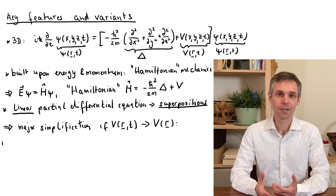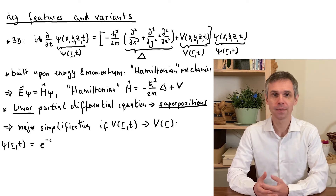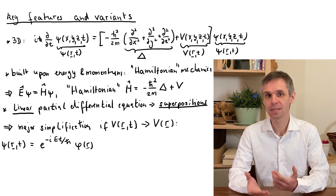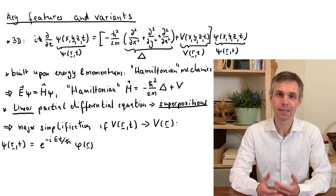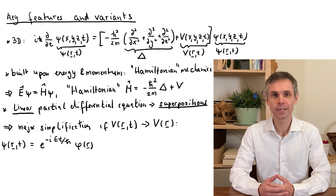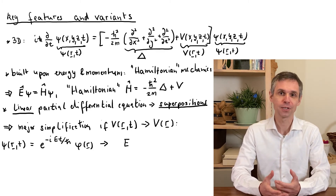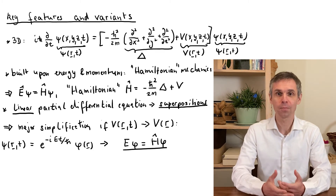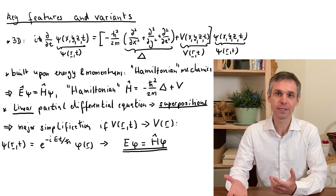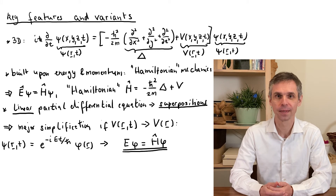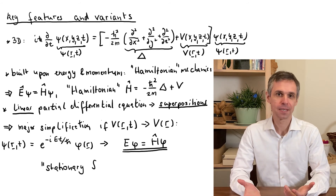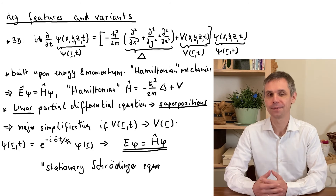In this case, we can use the method of separation of variables to isolate the time dependence and the position dependence in the wave function. Note that the time-dependent piece oscillates with an angular frequency in accordance with the Planck rule, where E is now just a constant. When we insert this separated form into the Schrödinger equation, we find that the spatial part of this wave function obeys a simpler version of the equation in which the energy operator is replaced by this constant. This simple equation is known as the stationary Schrödinger equation, and it describes a quantum system with a fixed energy, of which we will soon study several examples.